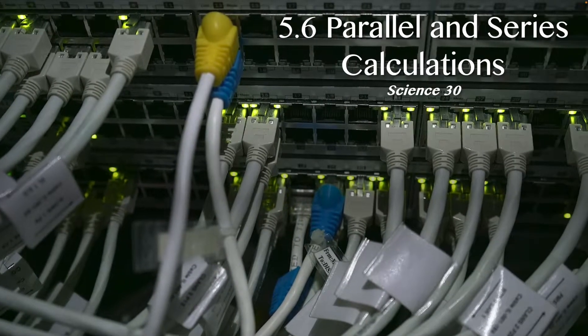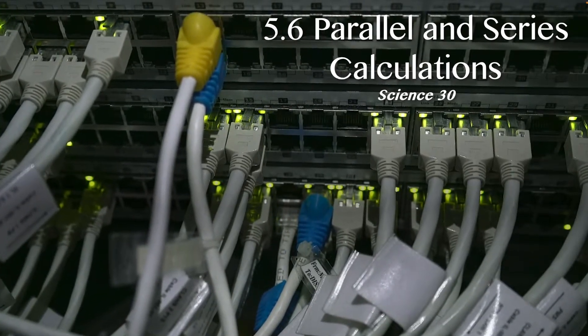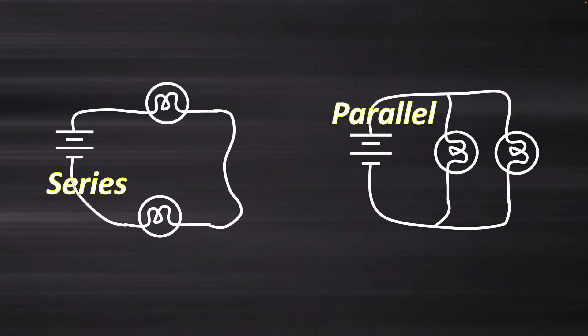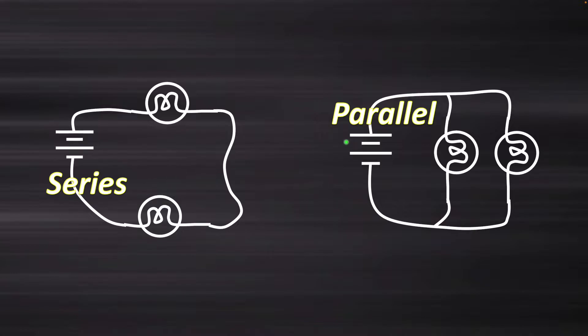Welcome back Science 30s to our next lesson in Chapter 5, this is 5.6, and today we're going to talk about parallel and series calculations. In the last video, we talked about the difference between a series circuit and a parallel circuit. In series, two light bulbs are connected one after another, and in parallel, a wire splits into two parallel wires with the light bulbs on each one. Last video we talked about drawing the diagrams, and now we'll look at how the calculations of voltage, amps, and resistance change in both series and parallel circuits.